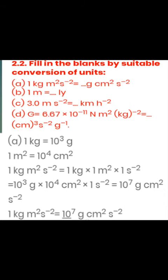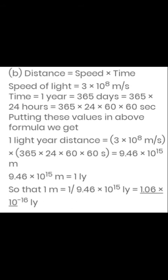For unit conversions: 1 meter² = 10⁴ cm². Then, multiply 9.46 × 10¹⁶ meters — one light year is equal to 9.46 × 10¹⁵ meters.